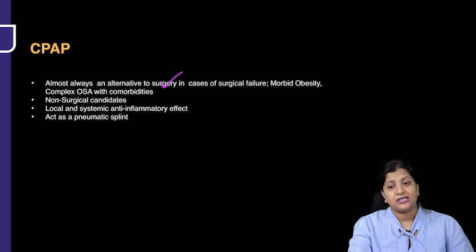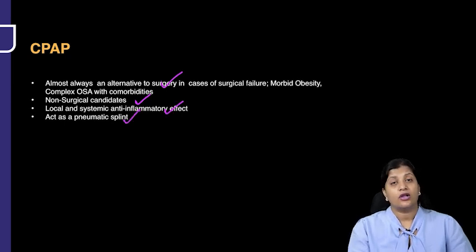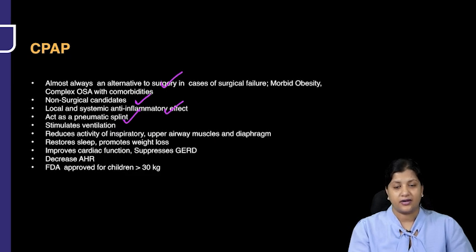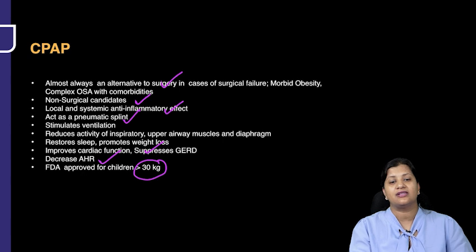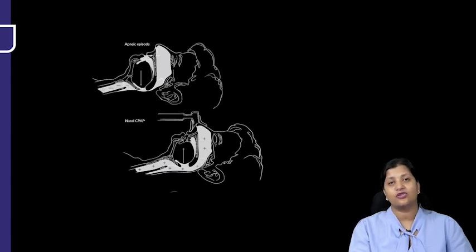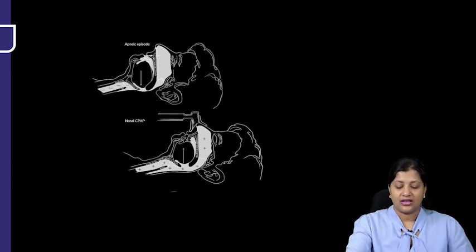For patients who are not fit for surgery, the alternative is CPAP. Morbid obesity or complex OSA with comorbidities are indications for non-surgical candidates. CPAP has local and systemic anti-inflammatory effects, acts as a pneumatic splint, reduces apneas, improves cardiac function, and decreases AHI. It is FDA-approved for children who are more than 30 kg in weight, though it is not the first line of therapy and is used only for specific indications.